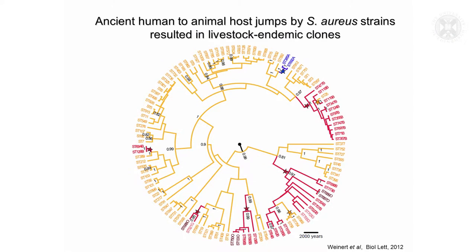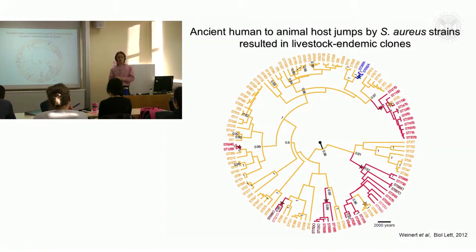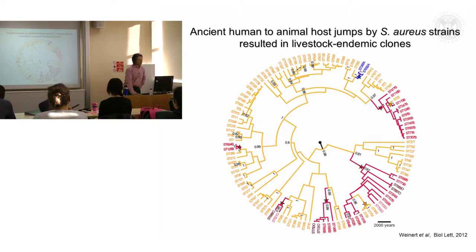This is a phylogenetic tree reconstructed to represent the overall phylogeny across the species. We took representative strains of Staph aureus from humans to capture as much diversity as possible, and representative strains from livestock including ruminants — cows, sheep, and goats — and birds as well. This is a radiating phylogenetic tree.